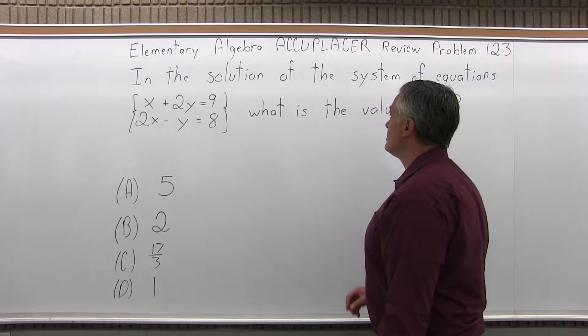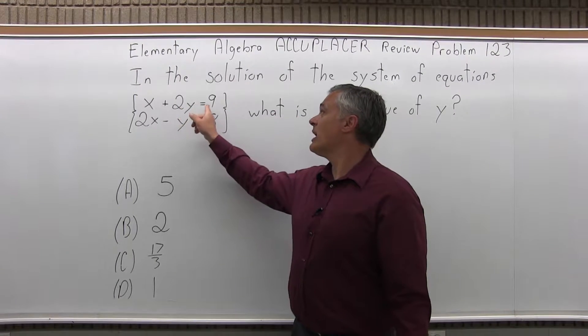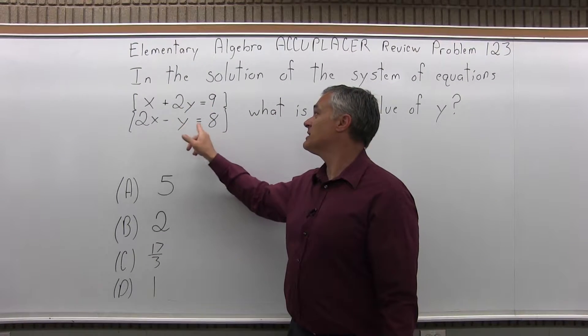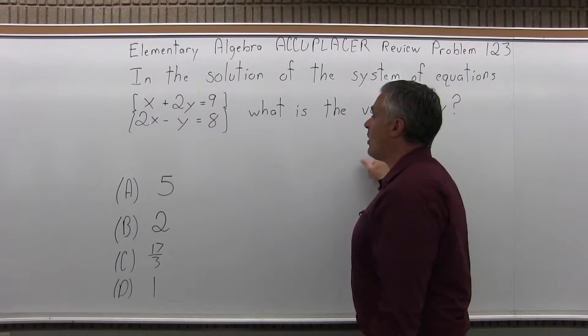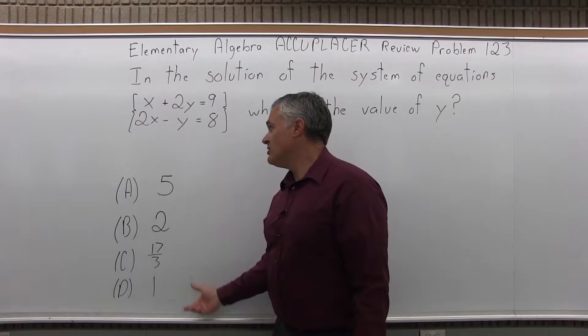It says, in the solution of the system of equations, x plus 2y equals 9 and 2x minus y equals 8, what is the value of y? And we have a few choices.